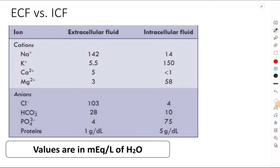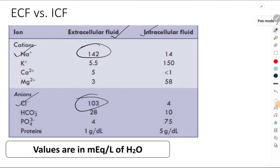Now what are the differences between extracellular fluid and the intracellular fluid? As we can see in this table, the extracellular fluid is rich in two important ions: one is sodium and another one is chloride. Whereas the intracellular fluid is rich in a very important ion called as potassium.